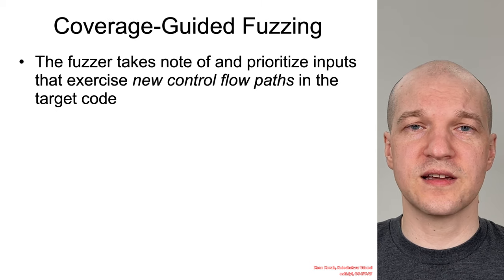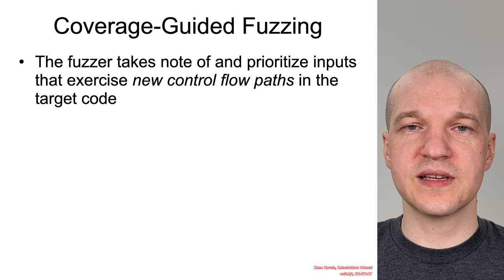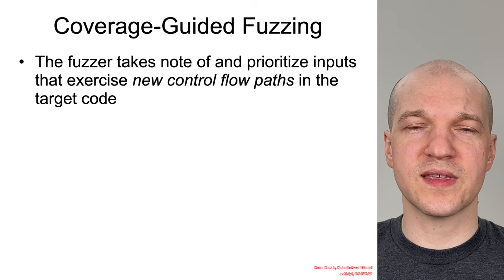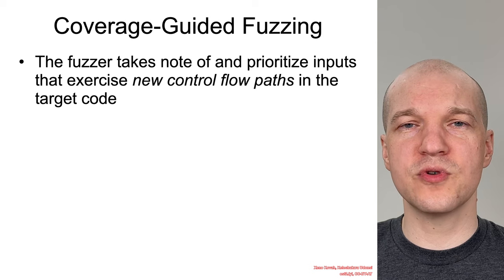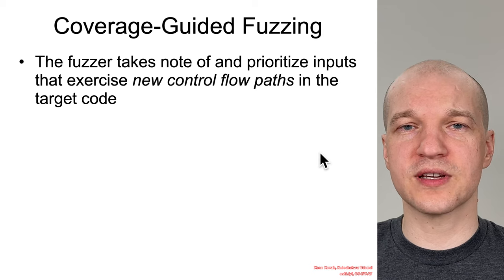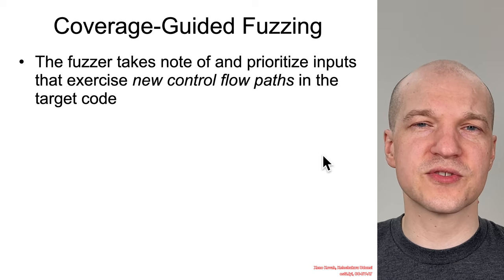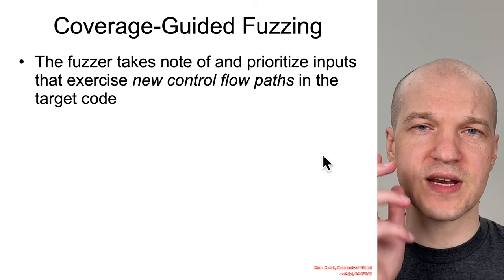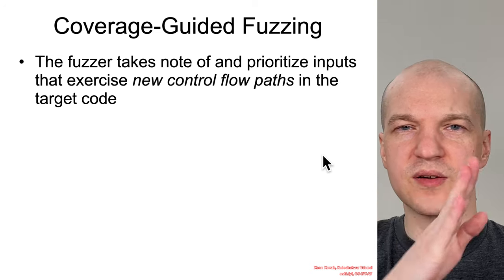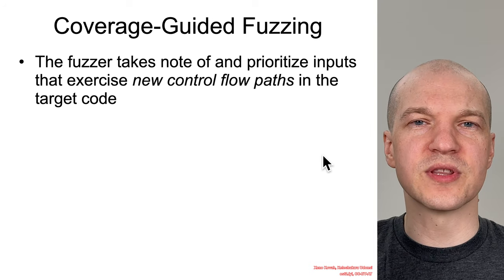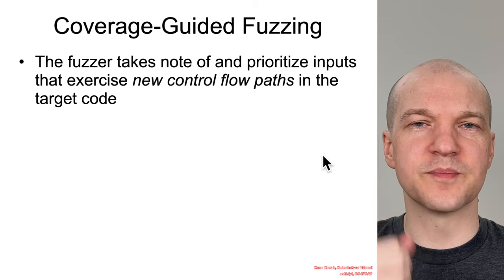Then there's coverage-guided fuzzing, which creates a feedback loop within the fuzzer that prioritizes code going down control flows that have not been seen before. Essentially, when a random input causes it to take a different flow path, that input is saved and reused later.